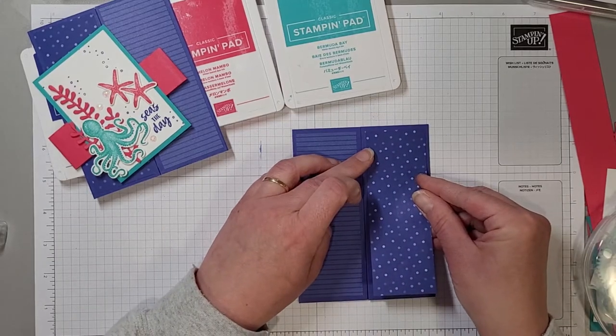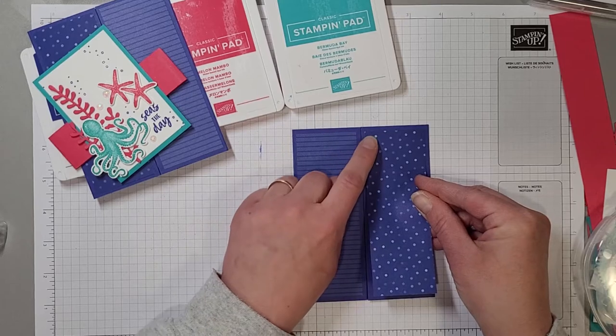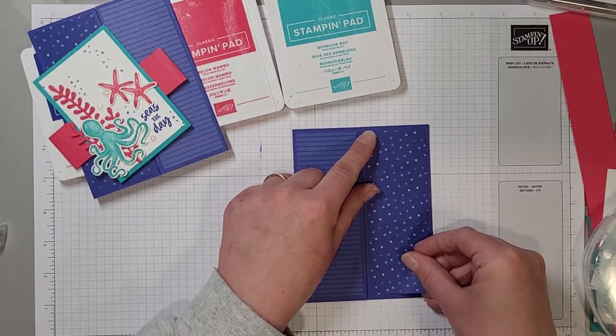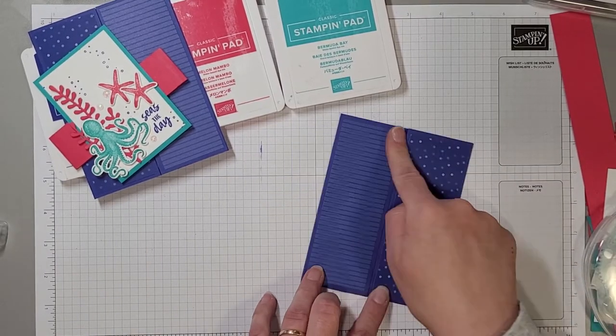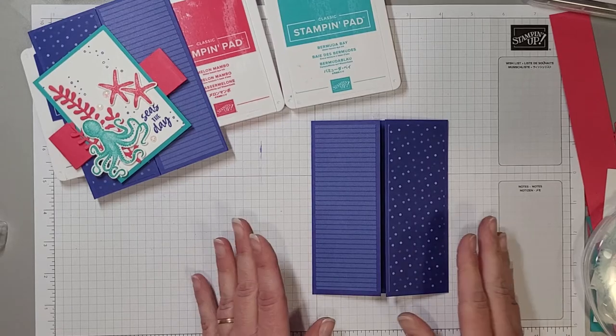You should get a nice even border all the way around your designer paper. And when you're putting on the second side be mindful of where you're lining it up so that it lines up roughly with the other side as well so that when you look at it quickly, it's a nice straight line across.